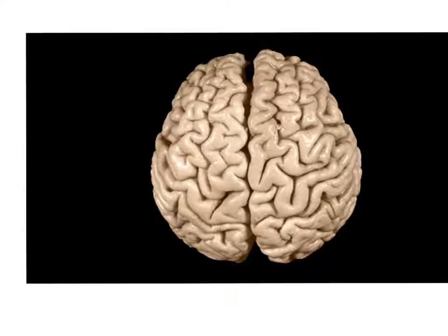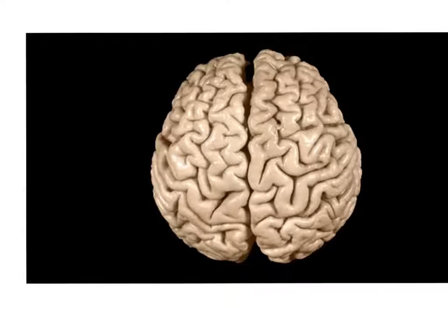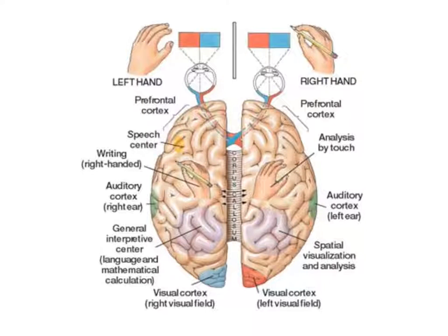Both hemispheres of the cerebrum are connected together through a large band of about 200 to 250 million nerve fibers called the corpus callosum. The corpus callosum helps both hemispheres communicate with each other. Both hemispheres are in charge of different functions.